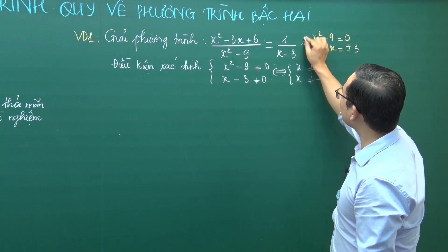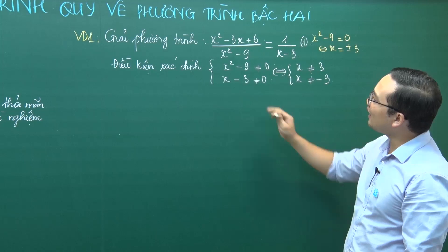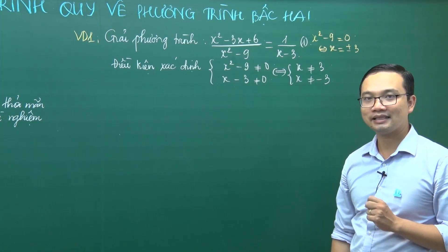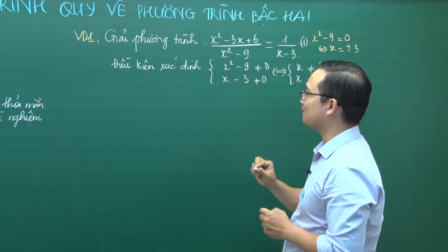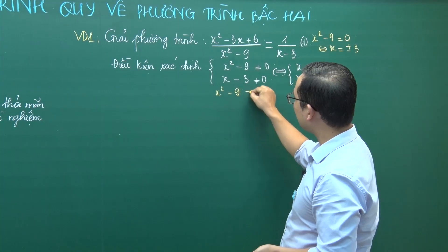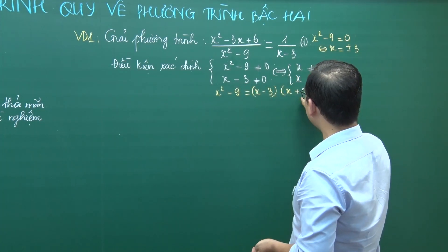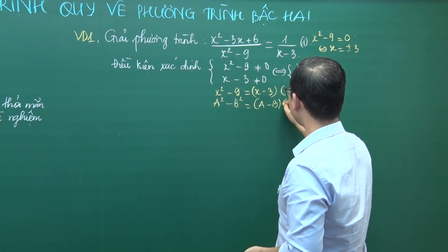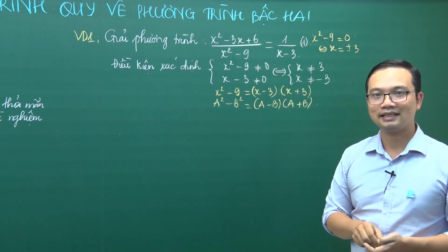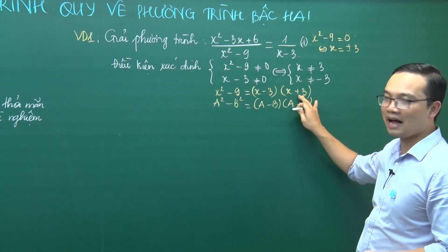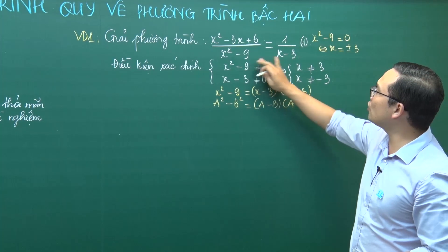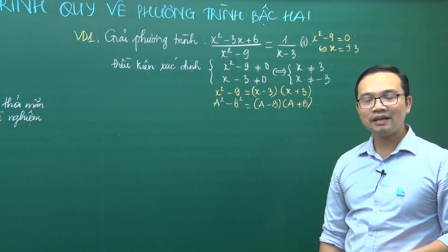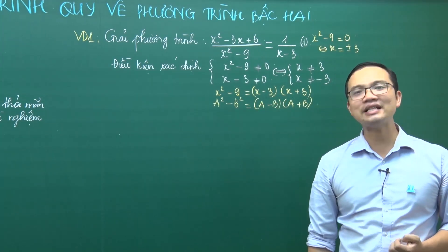Mẫu của phân thức thứ nhất là (x - 3)(x + 3), mẫu của phân thức thứ 2 là (x - 3). Mẫu chung là x² - 9 = (x - 3)(x + 3). Mẫu thứ 2 thiếu (x + 3) nên nhân cả tử và mẫu với (x + 3). Nguyên tắc: mẫu thiếu cái gì thì nhân cả tử và mẫu với cái đó.